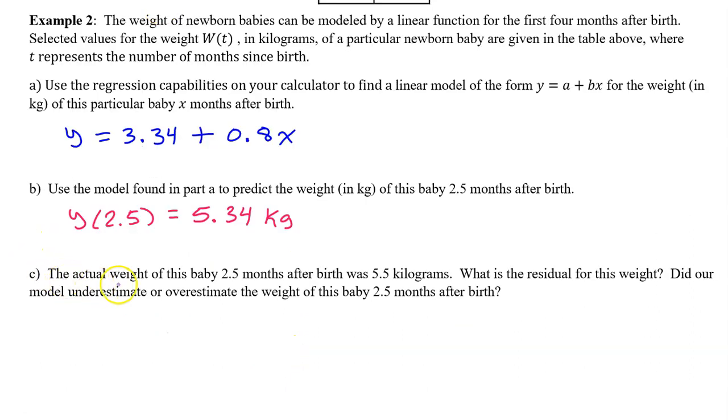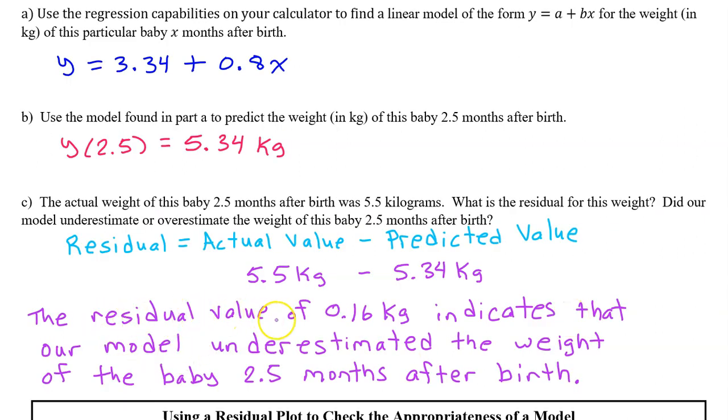Part C. The actual weight of this baby 2.5 months after birth was 5.5 kilograms. What is the residual for this weight? Did our model underestimate or overestimate the weight of this baby 2.5 months after birth? Remember that the residual is the actual value minus the predicted value. So, 5.5 kilograms minus 5.34 kilograms. The residual value of 0.16 kilograms indicates that our model underestimated the weight of the baby 2.5 months after birth.